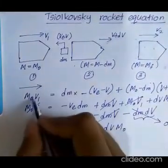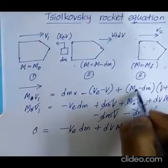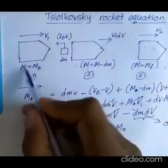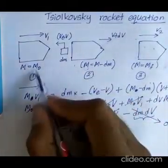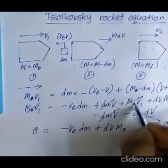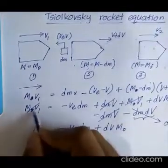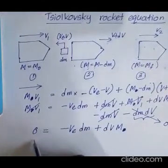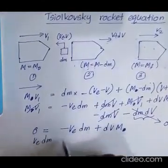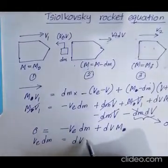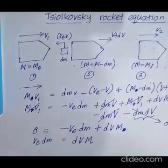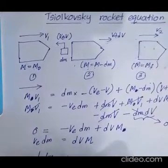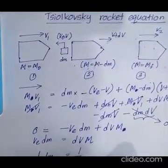Actually this is not M0, this is simply M. We are writing the general format of the equation considering the mass of the rocket to be M, and M is changing as M0 and M minus dm. These are all M's. So we can rearrange the equation as Ve dm equals dV into M. Again rearranging: 1 over M dm equals 1 over Ve dV.